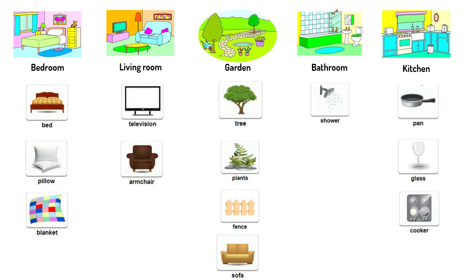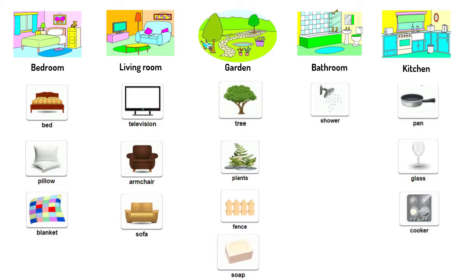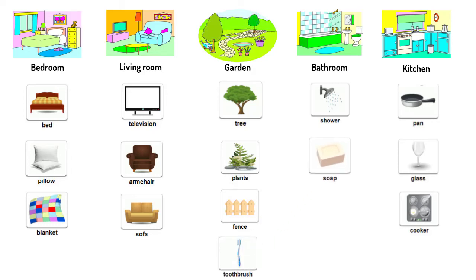The next is sofa — where do you think sofa will go? That's right, you can find a sofa in the living room. And the last picture is toothbrush — where does it go? It goes to the bathroom here. And that's all for this matching activity. Good job, everyone.